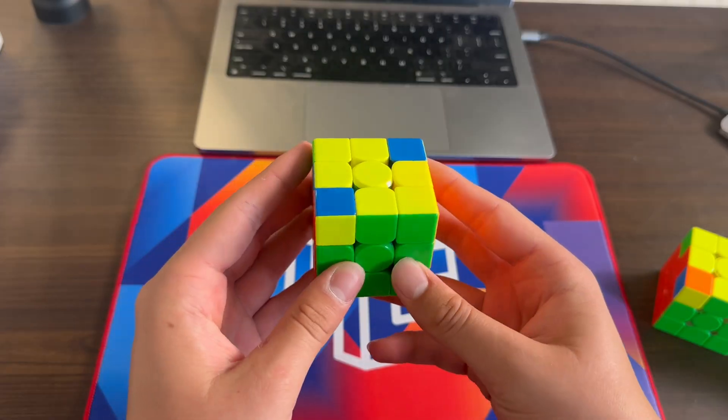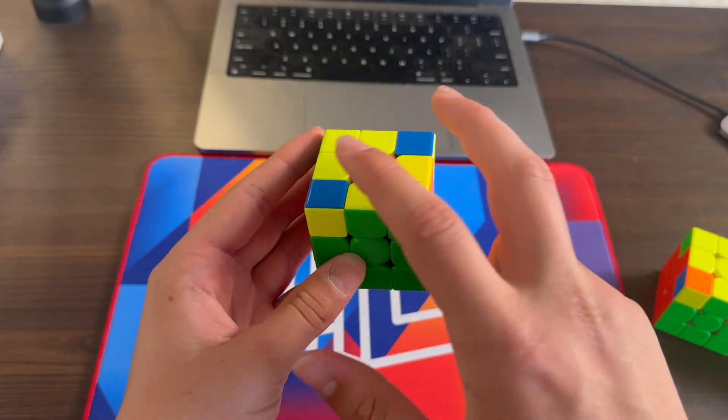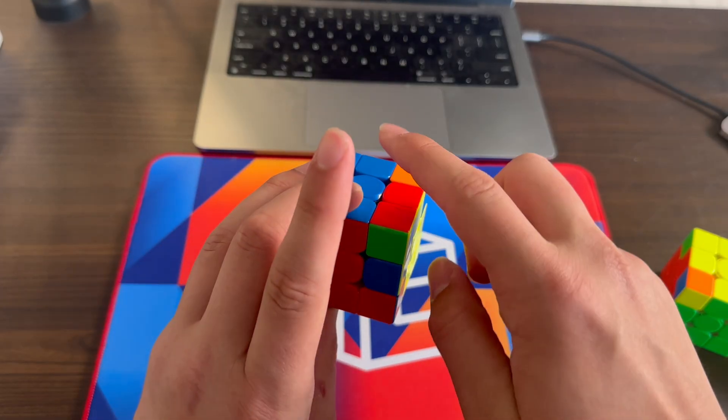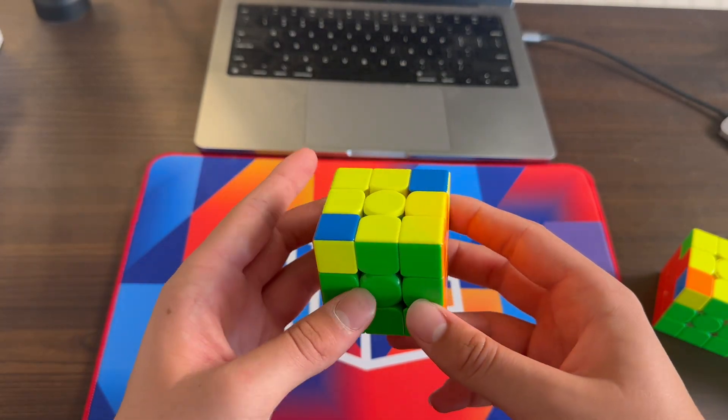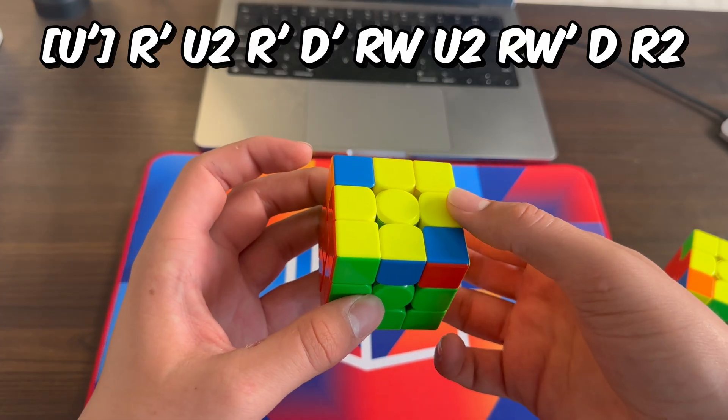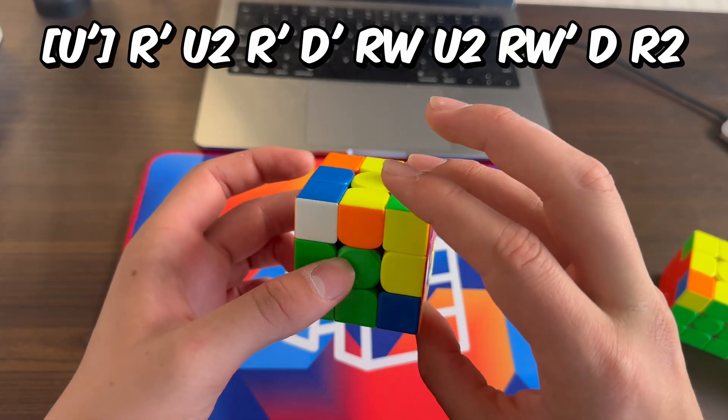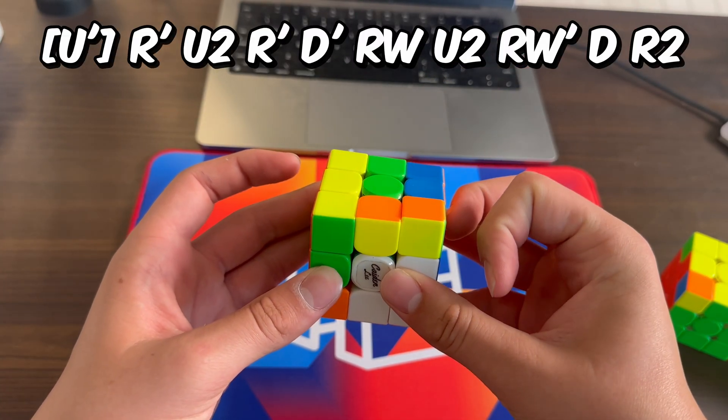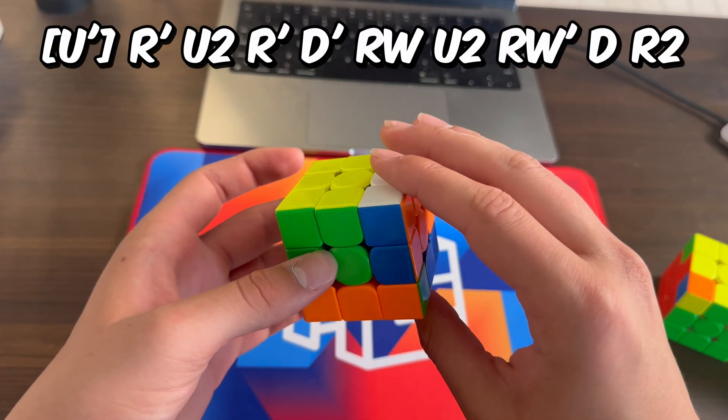For this next case, it's just the mirror of the last one. You have these two are matching and the front one is now opposite this time and you have the block right here in the back and you're going to do a U' again and the algorithm goes like this, R'U2R', D, and then you're going to do YRU2, YR', then DR2.